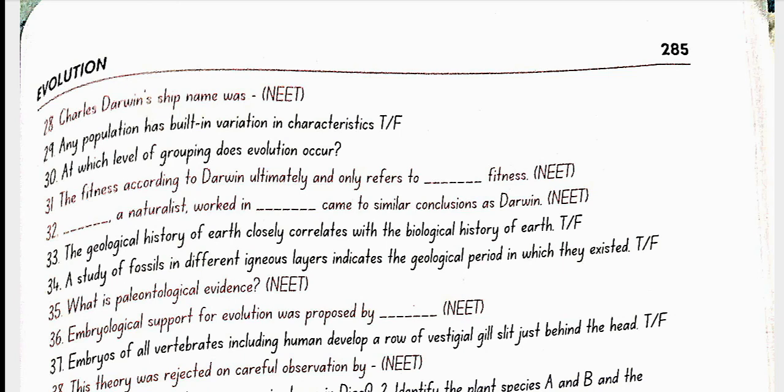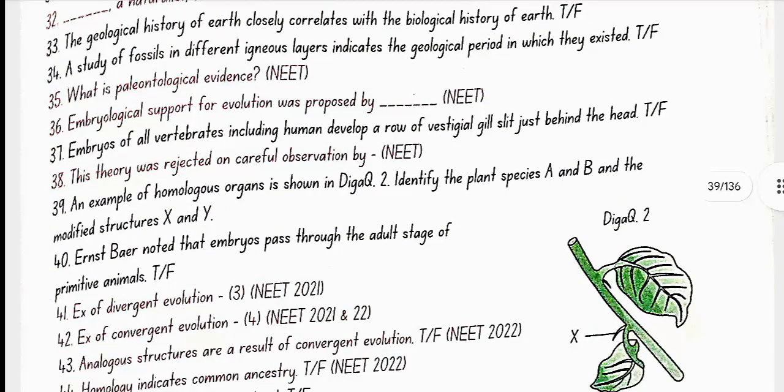The geological history of earth closely correlates with the biological history of earth. Yes, true. A study of fossils in different sedimentary layers, not igneous layers, indicates the geological period in which they existed. What is paleontological evidence due to fossils? Embryological support for evolution was proposed by Ernest Haeckel. Embryos of all vertebrates, including humans, develop a row of vestigial gill slits just behind the head. Yes, true.